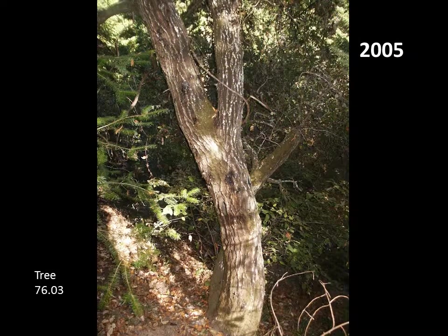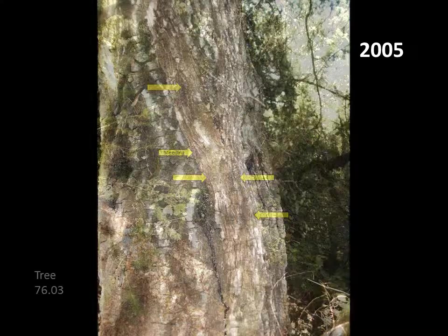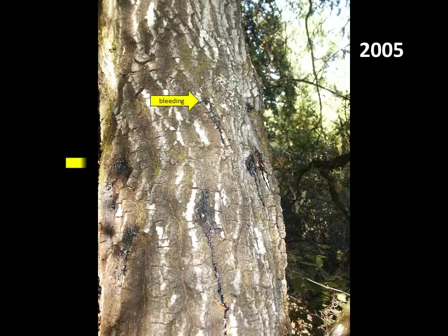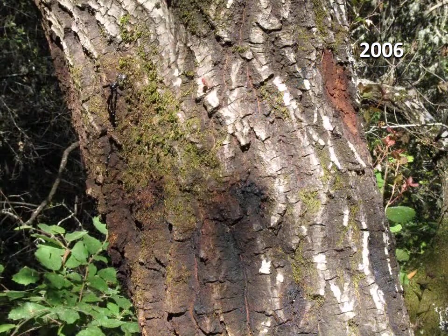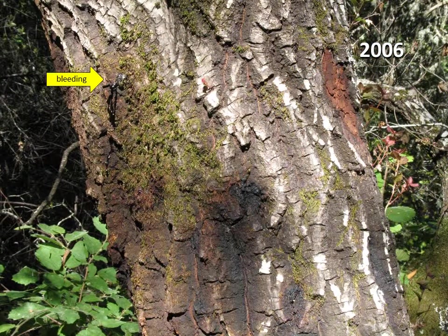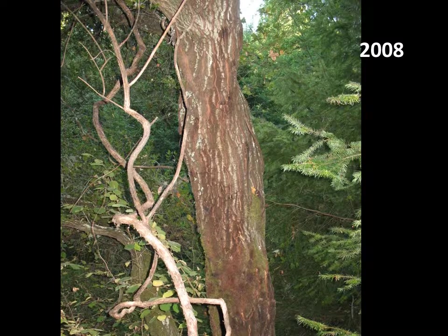After the wet spring of 2005, this oak developed many new bleeding cankers. This close-up shows at least five bleeding cankers. Chipping the outer bark away reveals a portion of one canker. By the next year, one of these cankers is still bleeding, but bleeding has stopped in two other cankers. By 2008, after a couple of drier years, most of these cankers have stopped bleeding and are not expanding.